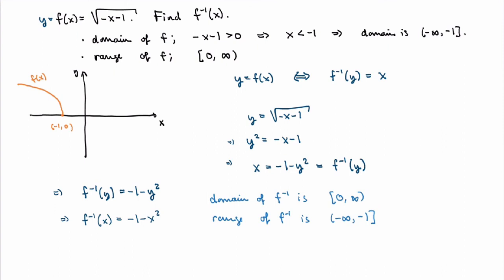You can also sketch the graph of the inverse function — it's one half of a downward-opening parabola starting at (0, −1), only for non-negative x-values. A general feature of inverse functions is that if you draw the line y = x, the graph of f⁻¹(x) is the reflection of the graph of f(x) along that line. This makes sense: if the point (a, b) is on the graph of f, meaning f(a) = b, then f⁻¹(b) = a, so (b, a) is on the graph of the inverse.